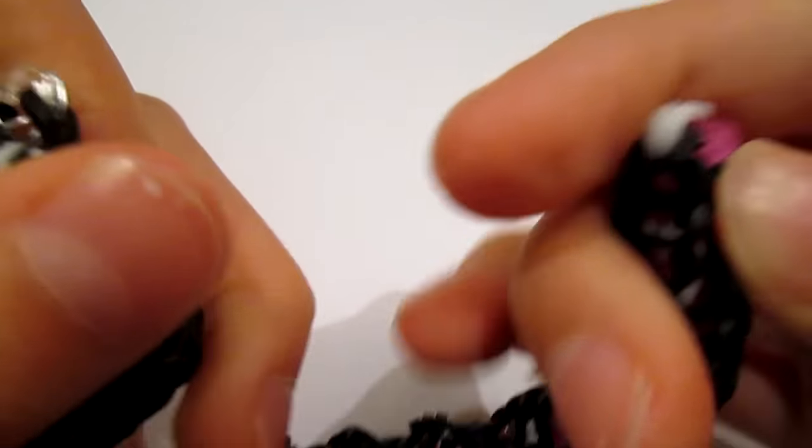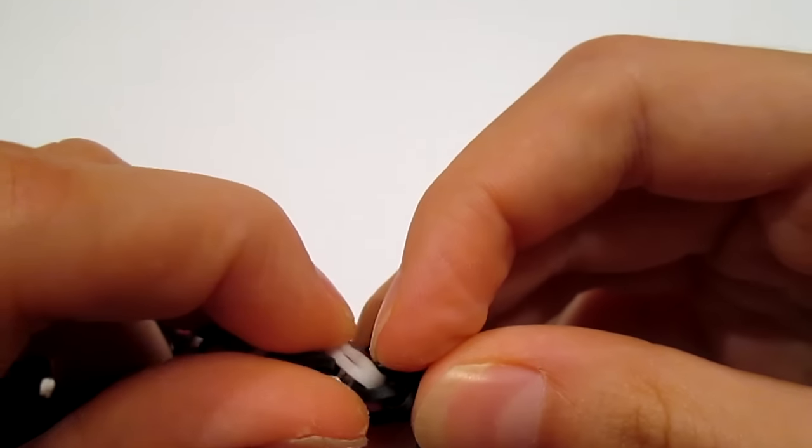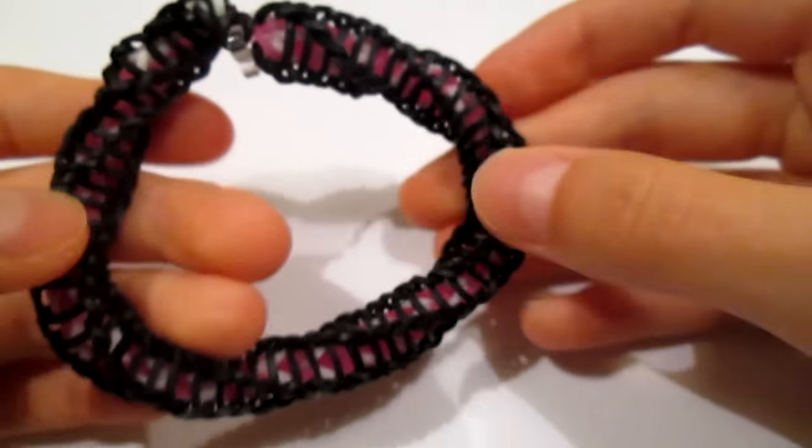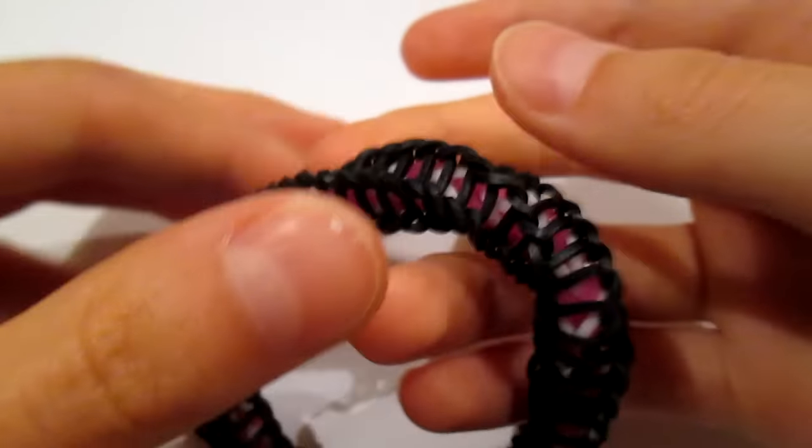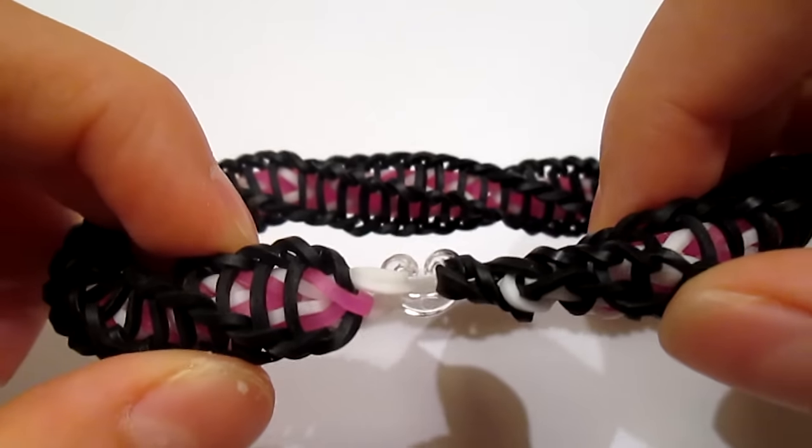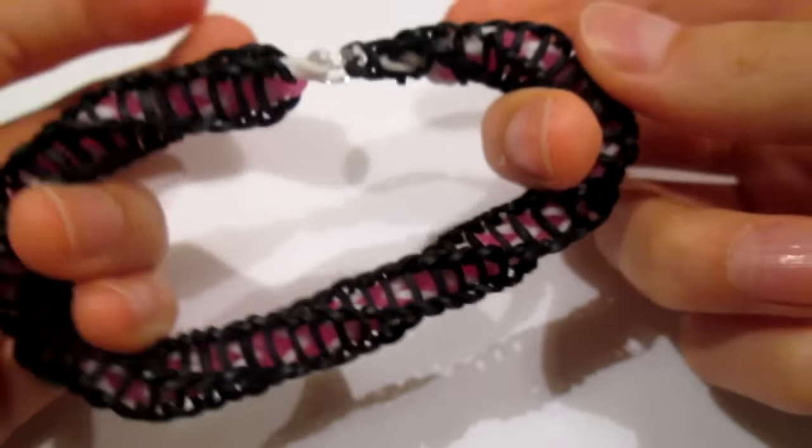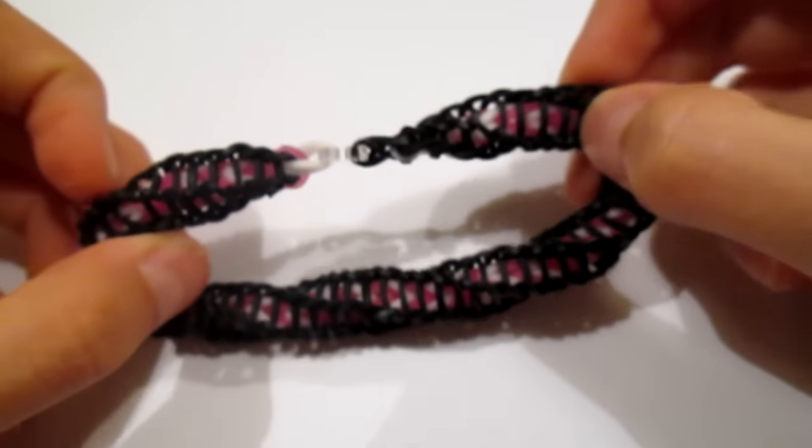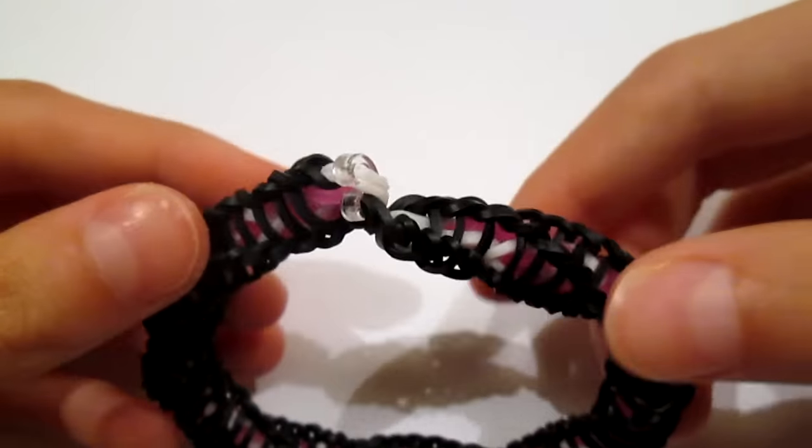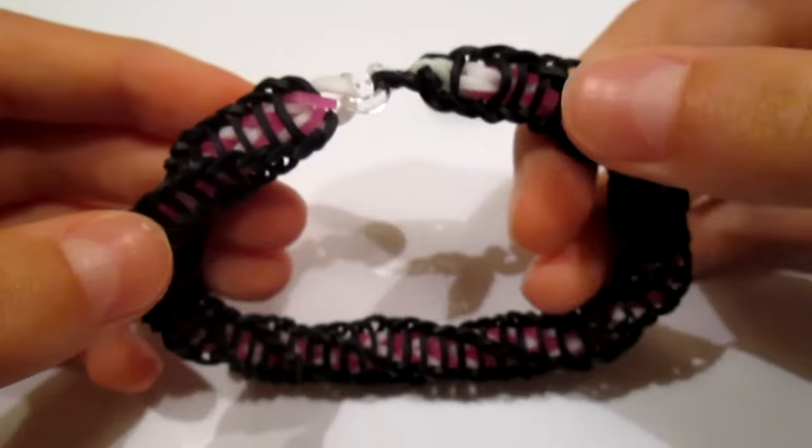And then, making sure you don't untwist it, find the cap band. Take a clip. And then, just clip it. And then, you want to evenly distribute your twisting. And then, if you ever see your cap band twisting a lot, it means that you can twist your bracelet a bit more. Like that. Twist it a tiny bit more.